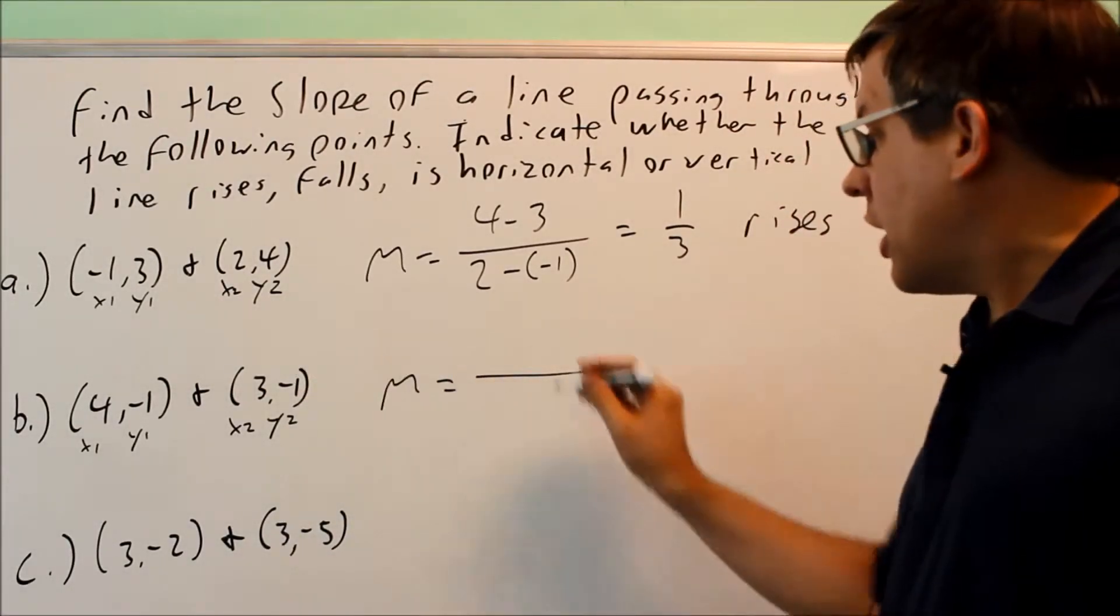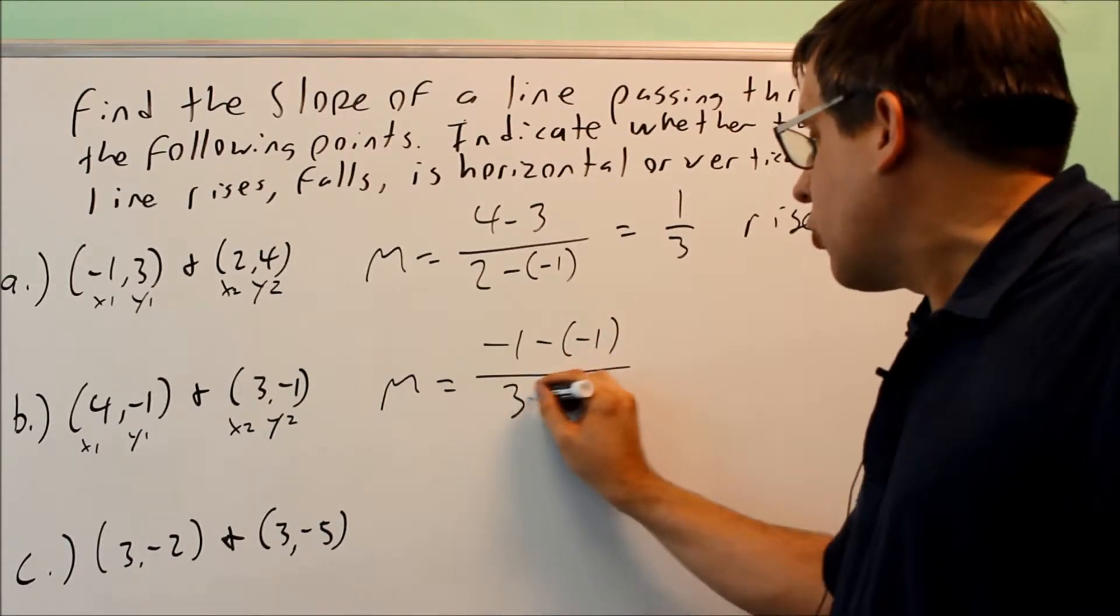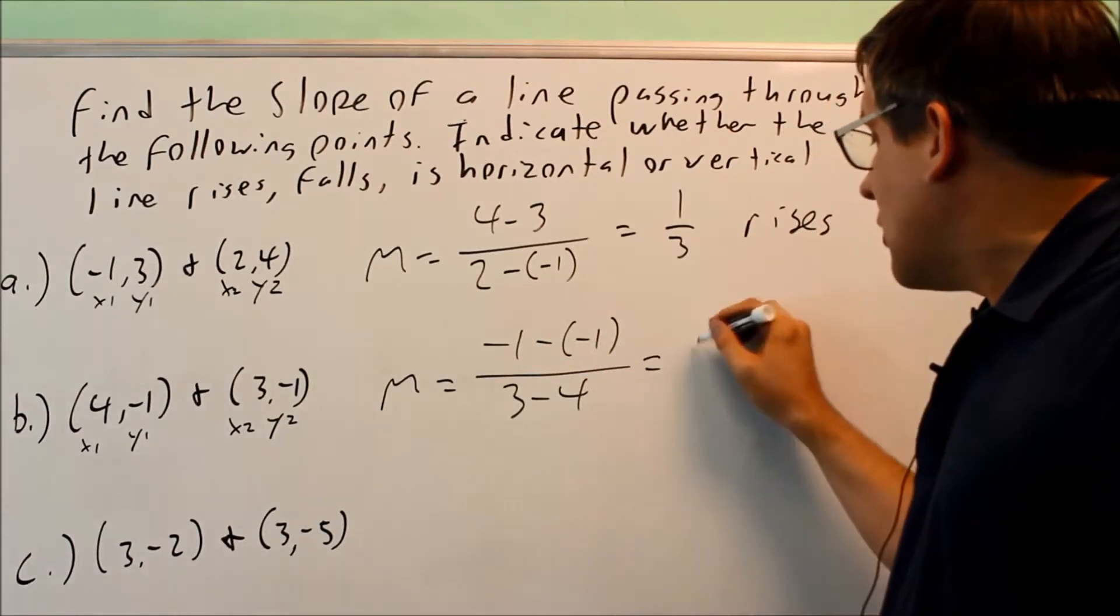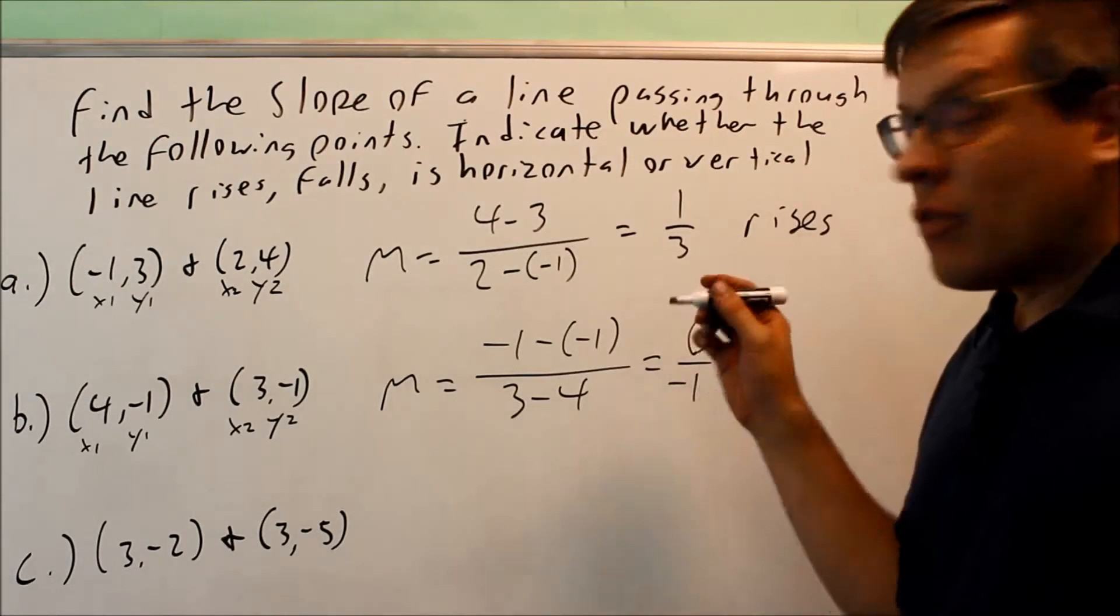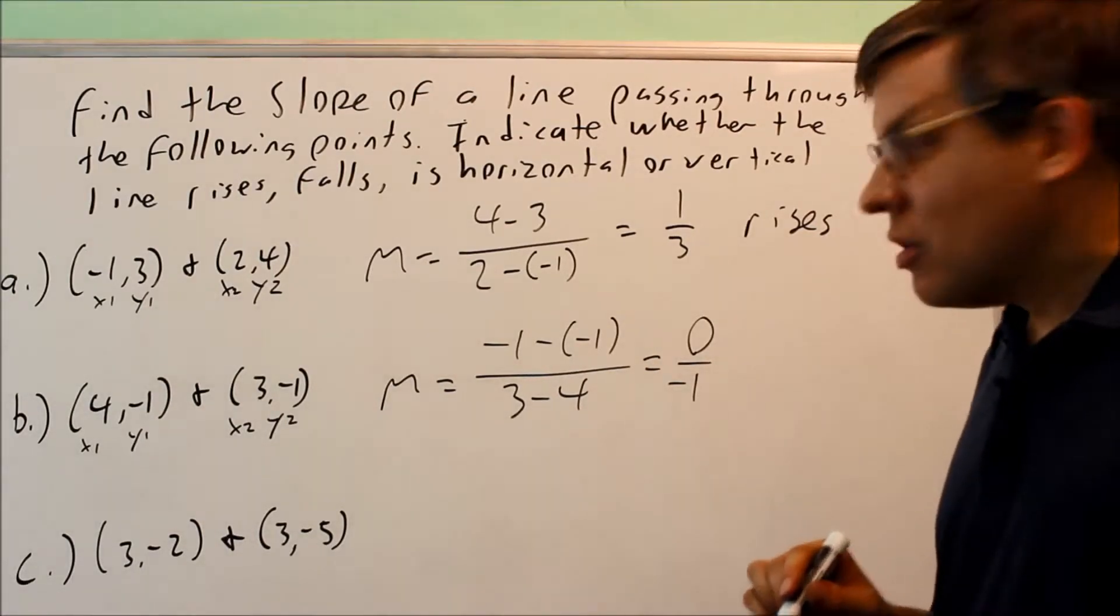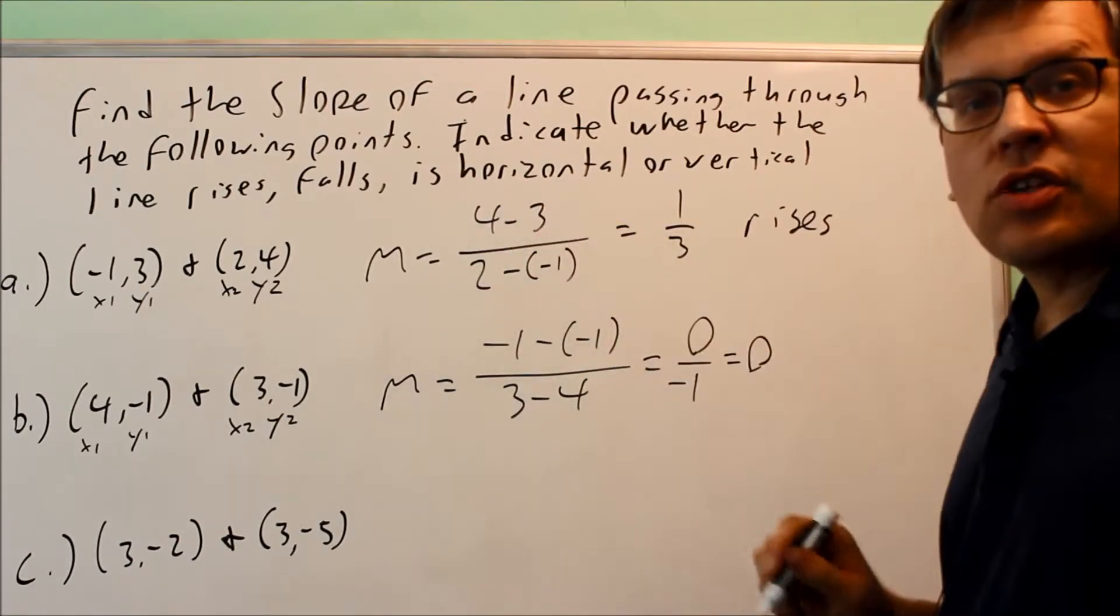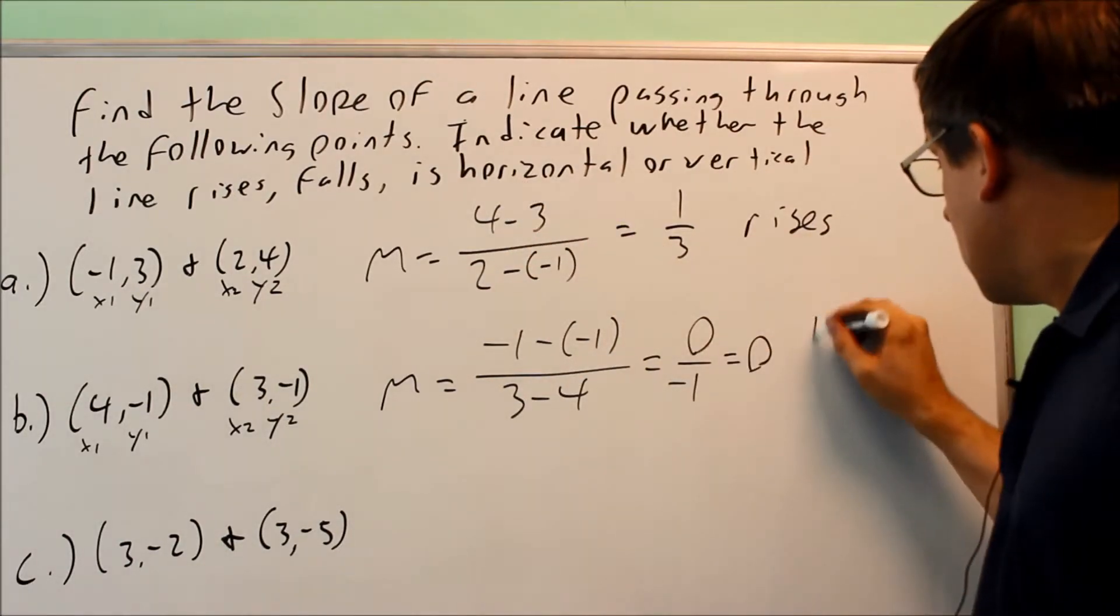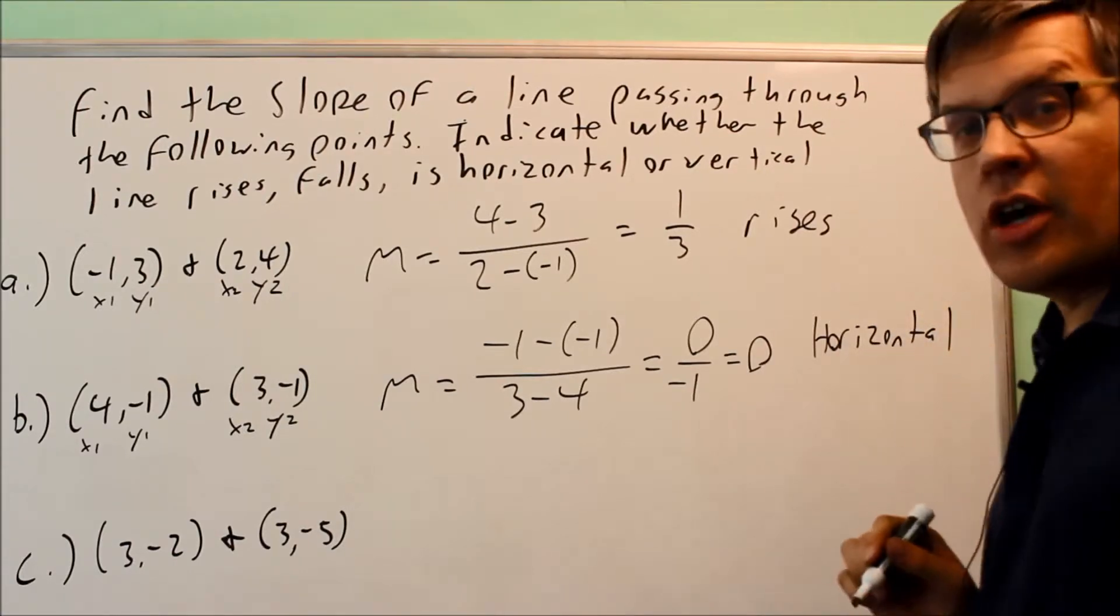y2 minus y1, I have negative 1 minus negative 1. In the bottom, I have 3 minus 4. I get 0 on top over negative 1. Now, if 0 is on the top, 0 over anything is going to be 0. So therefore, I get 0. If you have a slope of 0, that means that it's going to be horizontal. That's a horizontal line.